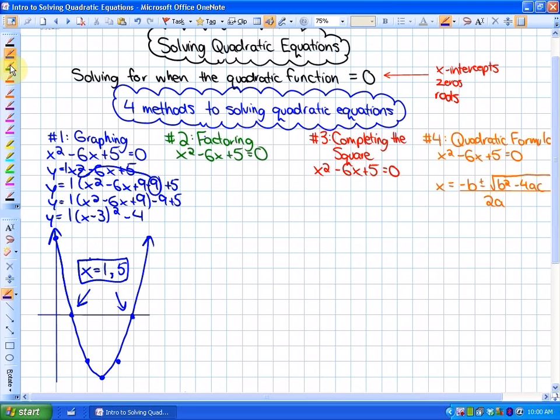Second method, solving by factoring. The exact same question. We're going to get the exact same answers. If I was to factor this, I would be thinking of two values that multiply to 5 and add to negative 6 in this particular case, because this is ax squared plus bx plus c is equal to 0, where a is equal to 1. So in this particular case, our factors are x minus 1 and x minus 5.